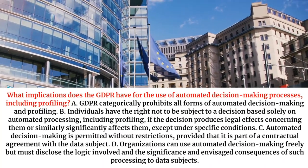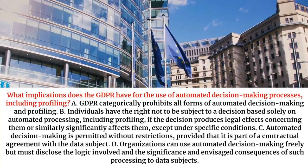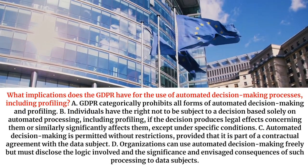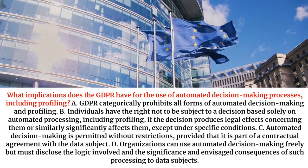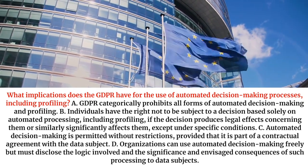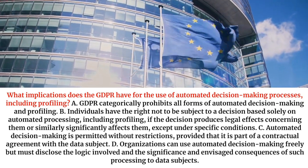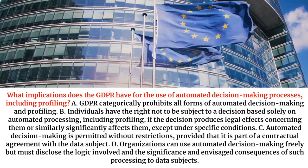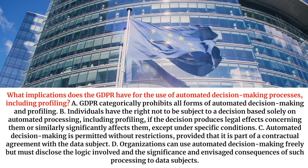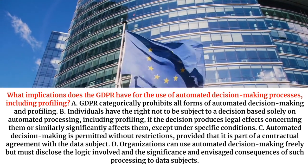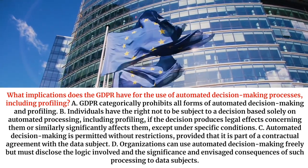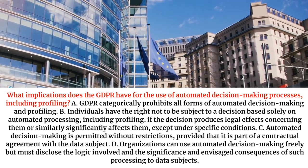What implications does the GDPR have for the use of automated decision-making processes, including profiling? A. GDPR categorically prohibits all forms of automated decision-making and profiling. B. Individuals have the right not to be subject to a decision based solely on automated processing, including profiling, if the decision produces legal effects concerning them or similarly significantly affects them, except under specific conditions.